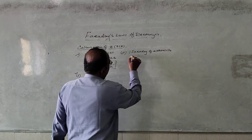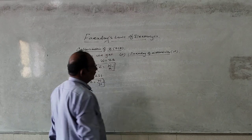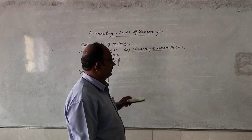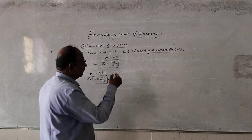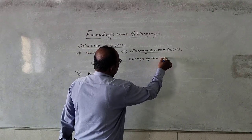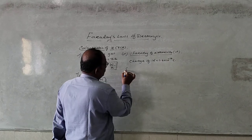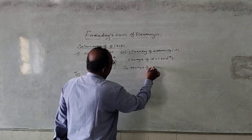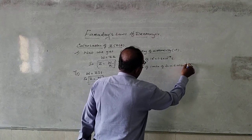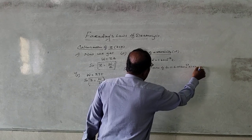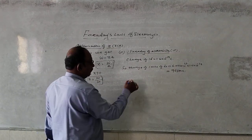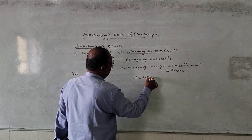One Faraday of electricity — what is it? One Faraday of electricity is defined as the amount of charge carried by one mole of electrons. So, the charge of one mole of electrons equals 6.023 times 10 to the power 23 multiplied by 1.6 times 10 to the power negative 19, which equals 96,500 coulombs. So, one Faraday of electricity is equal to 96,500 coulombs.